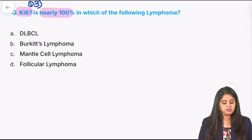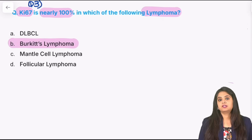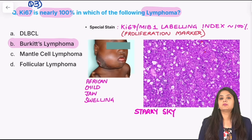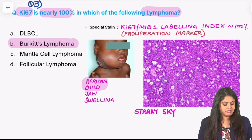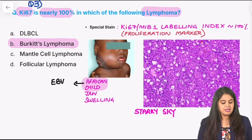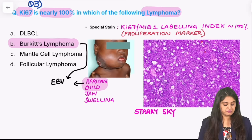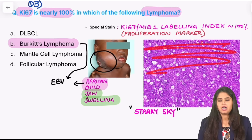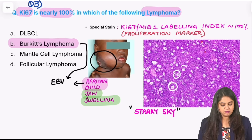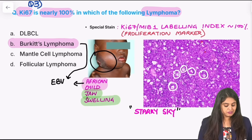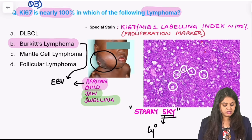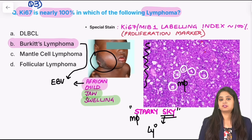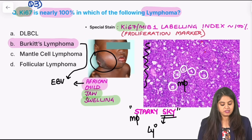Question three: which lymphoma has Ki-67 nearly 100 percent? The answer is Burkitt's lymphoma. It is usually seen in an African child because Africa is endemic for Epstein-Barr virus, and Burkitt's lymphoma is associated with EBV. The most common location is a jaw swelling. We see the classical starry sky appearance — everything looks dark like the sky, but there are white cells shining in between, referred to as the stars. The lymphoma component is actually the background; the stars are macrophages.